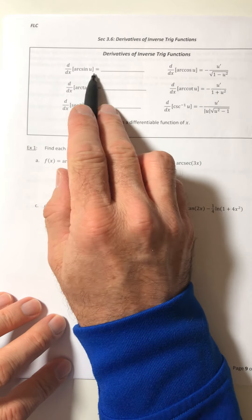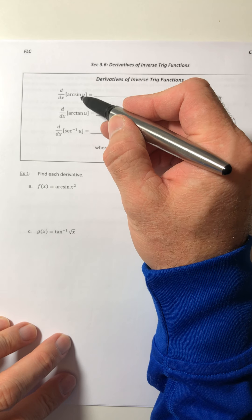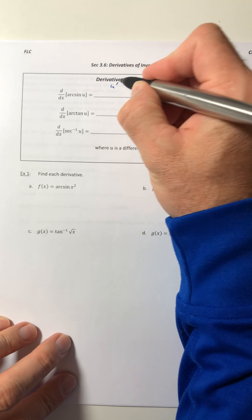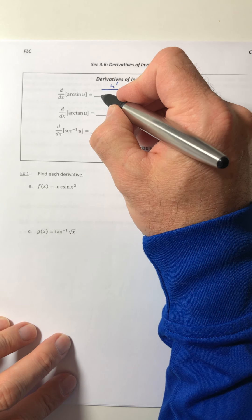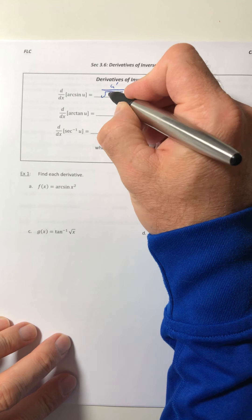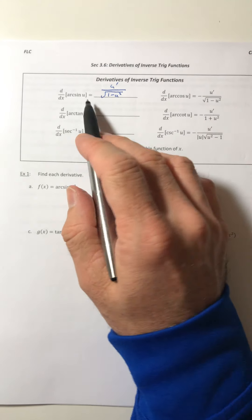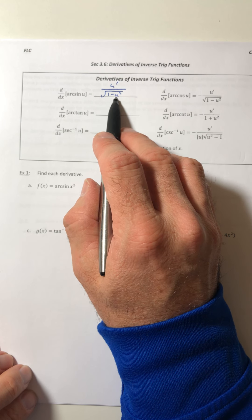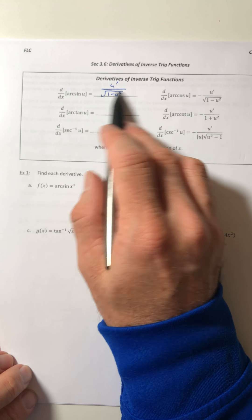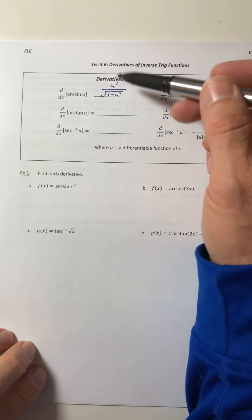So for arc sine, when you do its derivative, you take the derivative of what's in there. So that would be u prime, and that's going to sit on top of the quantity, the square root of 1 minus u squared. So you take whatever's inside of the arc sine, and you square it, and you're subtracting it from 1, and it's inside the radical in a denominator.